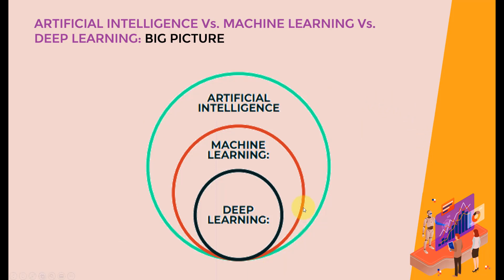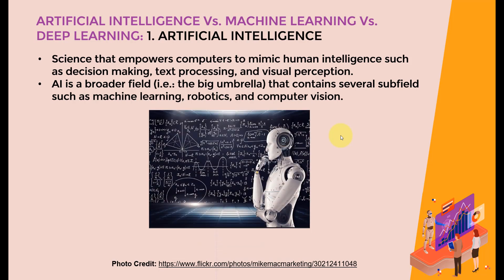Artificial intelligence is simply the big umbrella — the big field, represented by the green circle. Within AI, a subset is machine learning, and within machine learning, a subset is deep learning. Artificial intelligence, from a high level, is a science that empowers computers to mimic human intelligence, such as visual perception, decision making, and text processing. AI is the broader field — the big umbrella that contains several subfields within it, such as machine learning, computer vision, and robotics.